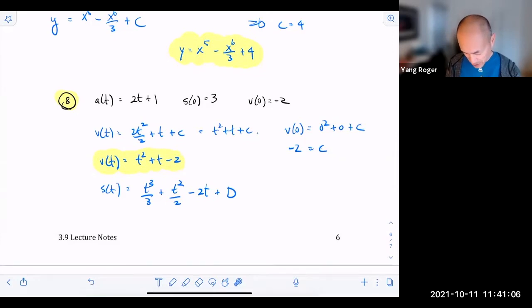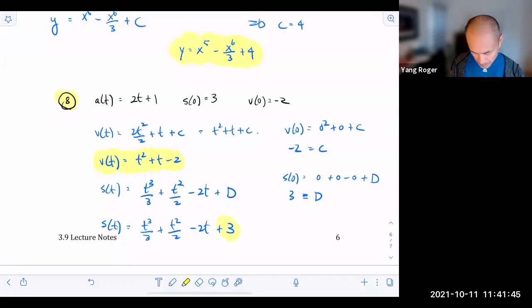Now I'm going to solve the initial condition. So we're going to have S of zero is equal to zero plus zero minus zero plus D. And we know that the left hand side is equal to three. That means the right hand side is equal to D. So your answer for the position function is going to be something that looks like this: T cubed over three plus T squared over two minus two T plus three. Is there any questions about this so far?